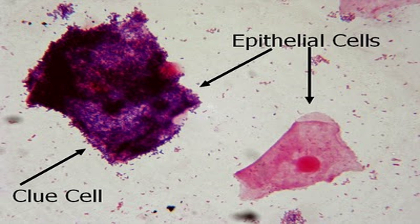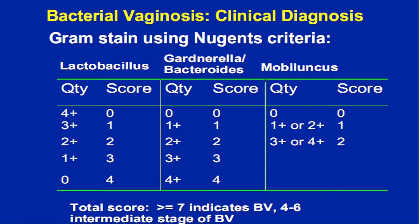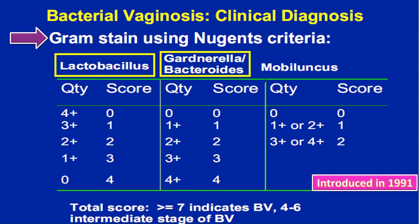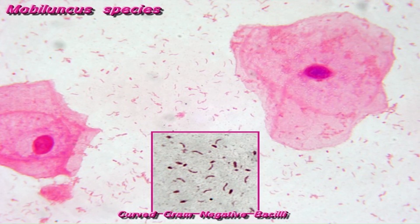Another test is Gram stain using Nugent's criteria, in which Lactobacillus, Gardnerella bacteria, Bacteroides, and Mobiluncus are identified and scoring is given according to the number of these bacilli. A total score of more than seven indicates bacterial vaginosis; four to six indicates an intermediate stage of bacterial vaginosis. Here you can see Mobiluncus species and curved Gram-negative bacilli.